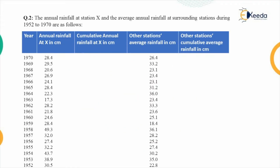Moving on to the next problem: the annual rainfall at station X — the problematic station — and the average annual rainfall at other surrounding stations for the years 1952 to 1970 have been tabulated. The data is recorded in reverse chronological order, from 1970 to 1952, giving annual rainfall for station X and average rainfall for other stations in centimeters.